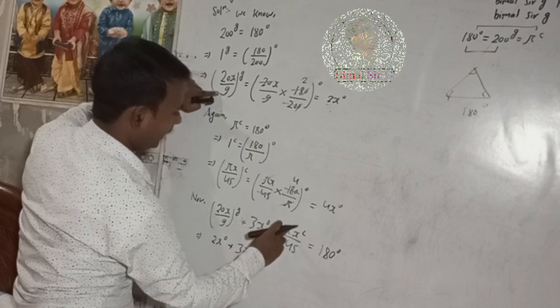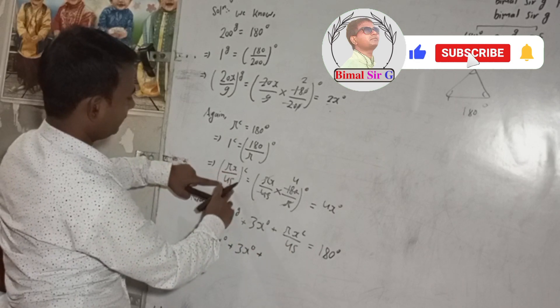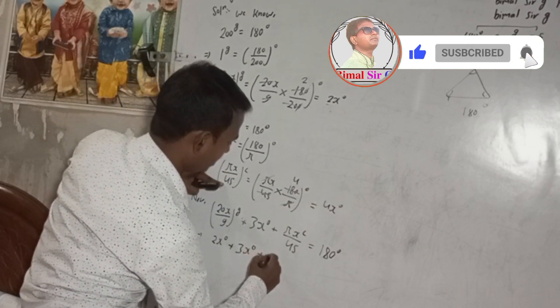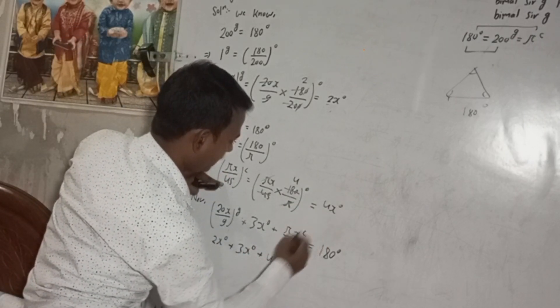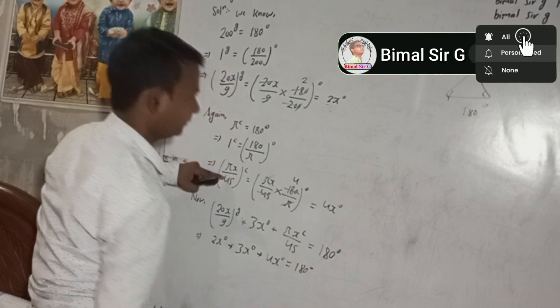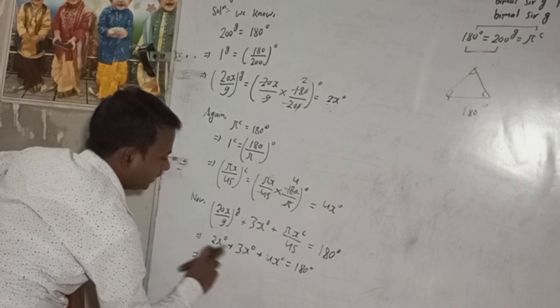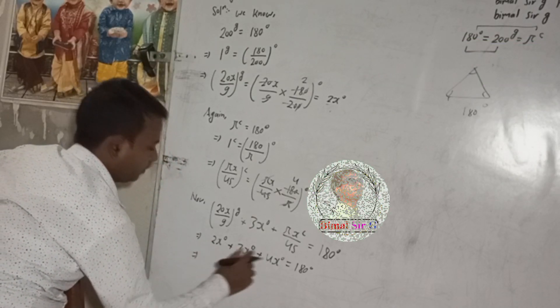This implies 2 plus 3 is 5, plus 4 is 9. So 9x degree is equal to 180 degree.